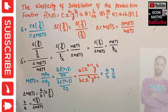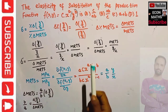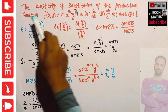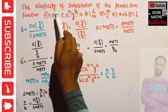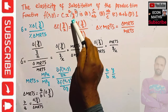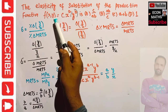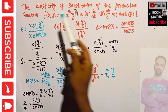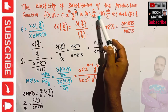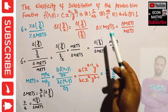In this video we will learn how to find the elasticity of substitution of the production function. The question is: the elasticity of substitution of the production function f(x,y) = c·x^a·y^b. This is a production function with inputs x and y. The options given are: c/(ab), ab/c, a+b, and 1. We need to find which of these is the elasticity of substitution.